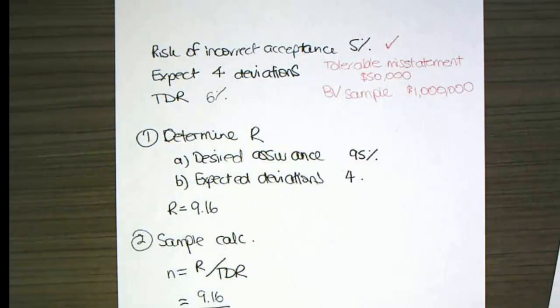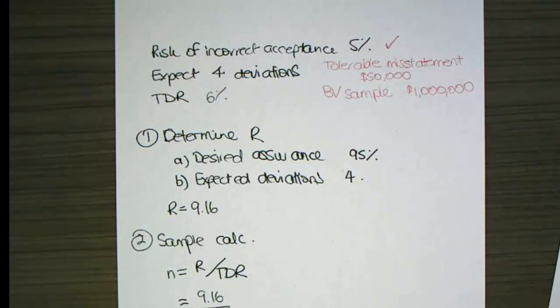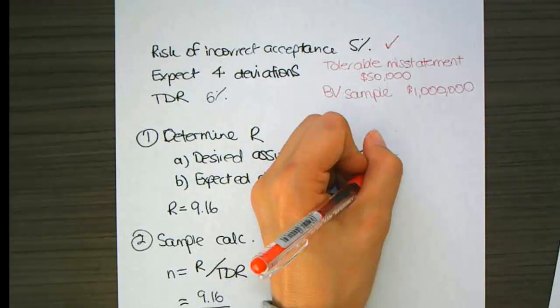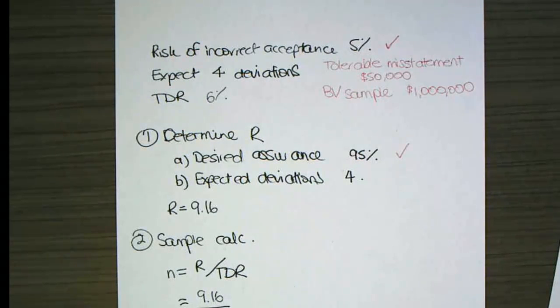OK, so I'm going to look at how we determine R. In this instance, we've got the desired assurance of 95%, but instead, I'm going to use table 11.5, which you're about to see flash up on your screen, and when you look at an incorrect acceptance of 5%, that gives you a reliability factor of 3.